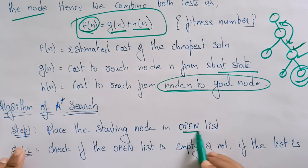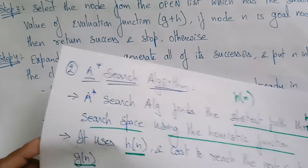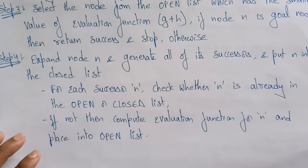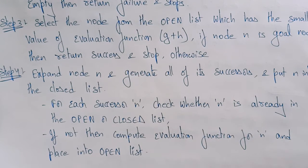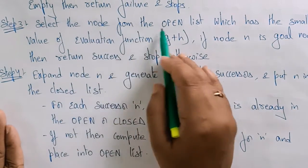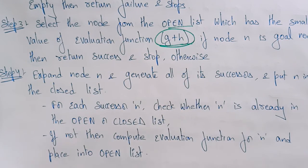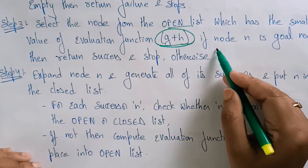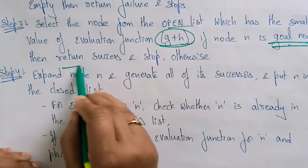Step 1: Place the starting node in the open list. Step 2: Check if the open list is empty. If the list is empty then return failure and stop. Otherwise, select the node from the open list which has the smallest value of the evaluation function f(n) = g(n) + h(n). If that node n is a goal node, then return success and stop.